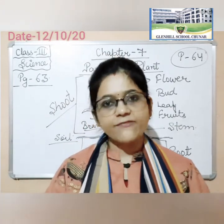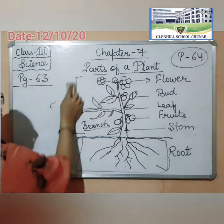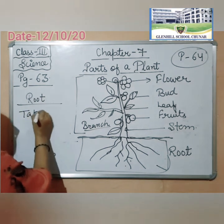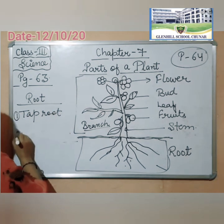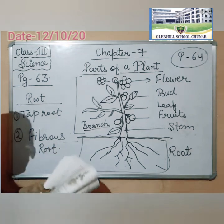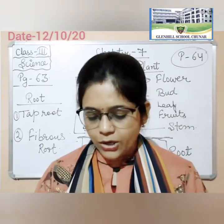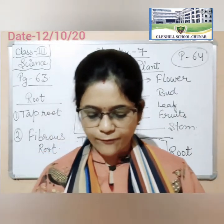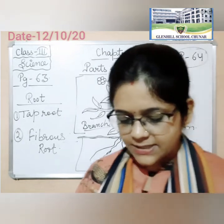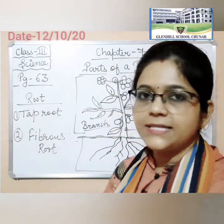Now roots are of two types: tap root and fibrous root. Root jo hoti hai wo two types ki hoti hai. One is tap root and the other is fibrous root. Now see the tap root — it consists of one main long thick root growing downward from which many smaller roots develop. Plants like turnip, radish, carrot, bean, mustard and pea have tap roots. Yeh sab tap roots hain — turnip, radish and pea.